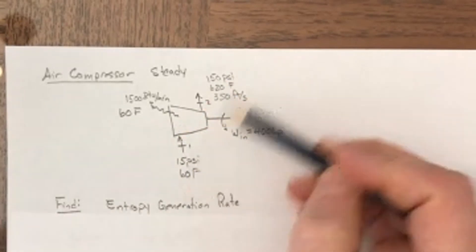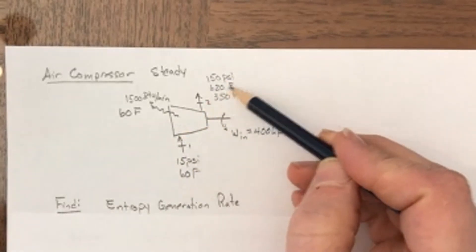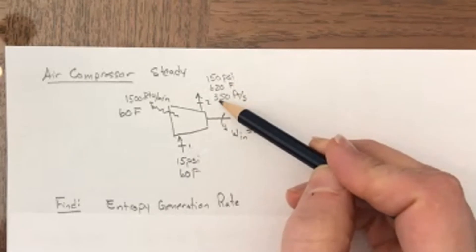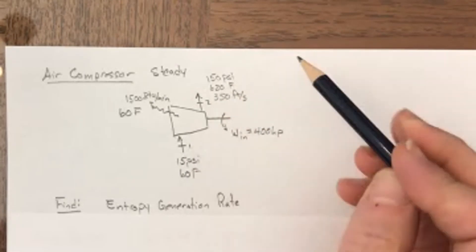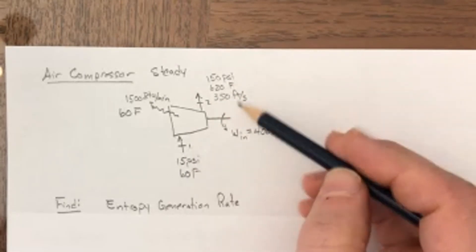The air is going in at 15 psi and 60 degrees Fahrenheit, and it's being compressed, and it comes out at 150 psi, so higher pressure, 620 degrees Fahrenheit, so pretty hot, and it's really cooking along at 350 feet per second.